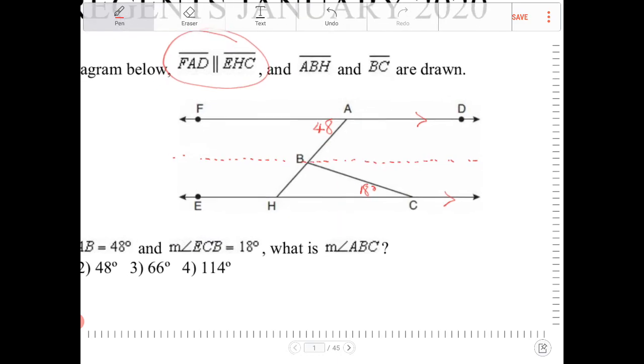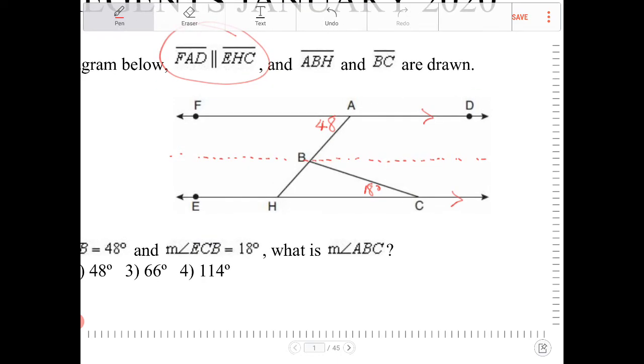So by drawing this line, now I notice that I have alternate interior angles. Right? I have this angle that's 48 degrees, which is going to be congruent to this guy right here, which is also going to be 48 degrees.